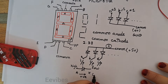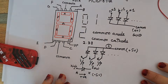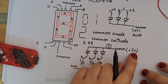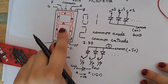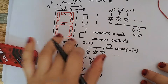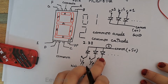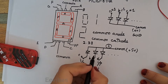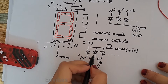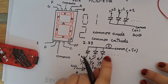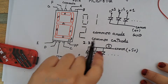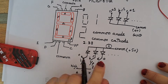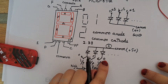In the common anode type, we connect plus five volts at the common pin. To turn on any LED, we provide logic zero at its cathode input. To turn off an LED, we provide logic one — five minus five equals zero, turning it off. To turn it on, logic zero is provided — five minus zero equals five volts, which turns on the LED.